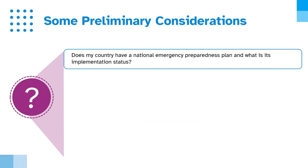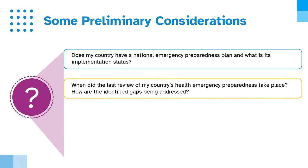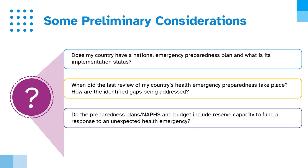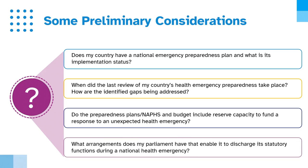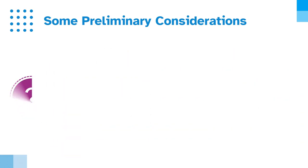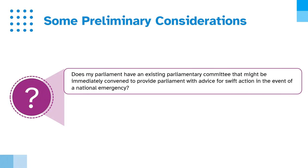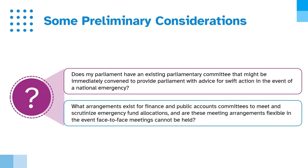Parliaments should conduct inquiries into the extent to which health emergency preparedness takes into account the differentiated impact of emergencies on men and women and their impact on vulnerable groups. Key questions include: Does my country have a national emergency preparedness plan and what is its implementation status? When did the last review take place and how are identified gaps being addressed? Do preparedness plans and budgets include reserve capacity for unexpected health emergencies? What arrangements does parliament have to discharge its statutory functions during a national health emergency, and are finance and public accounts committees able to meet flexibly, including when face-to-face meetings cannot be held?